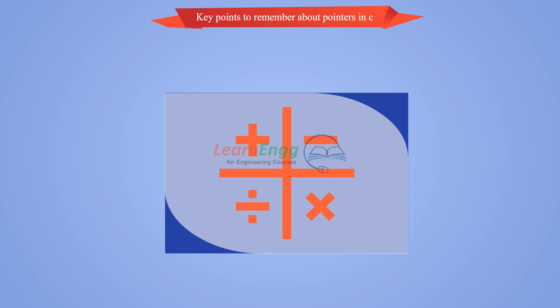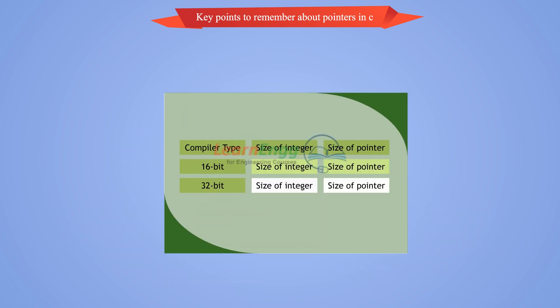Pointer addition, multiplication, division are not allowed. The size of any pointer is 2-byte, i.e., for example 16-bit compiler.